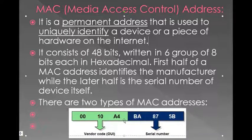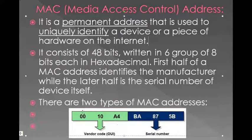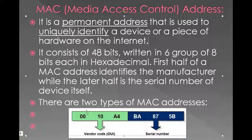The first half of a MAC address identifies the manufacturer — this is the manufacturer's code. Examiners sometimes ask what the first half and second half of a MAC address represent. The first half represents the manufacturer's code, whereas the second half represents the serial number of the device. For example, all devices made by Dell would have the same first six digits, but each device would have a different serial number.